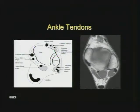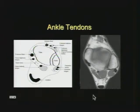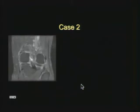Behind the fibula you have the brevis and longus peroneus. Look at the retinaculum over them — it should be thin and not stripped, as it holds them in place. Subluxation is a common problem, and there's always a peroneus brevis muscle there. Tom, Dick and Harry are the posterior tibial tendon, flexor digitorum longus, and flexor hallucis longus. The flexor hallucis usually has a muscle with it and is the only tendon that communicates with the ankle joint, so we frequently see fluid there. In the back we also have the Achilles tendon with frequent tears.